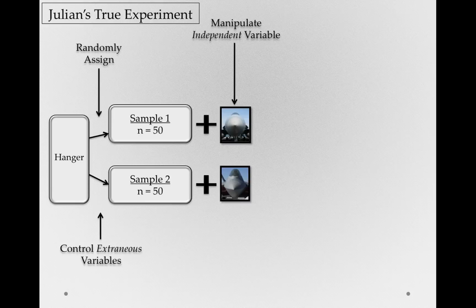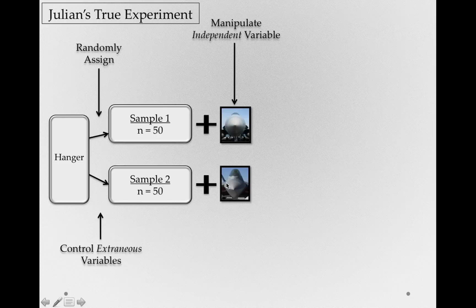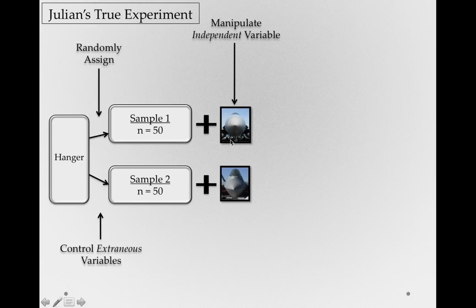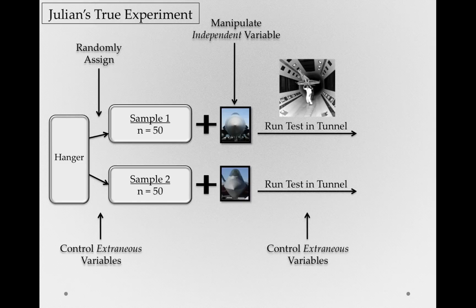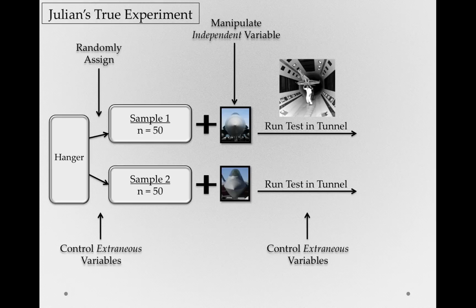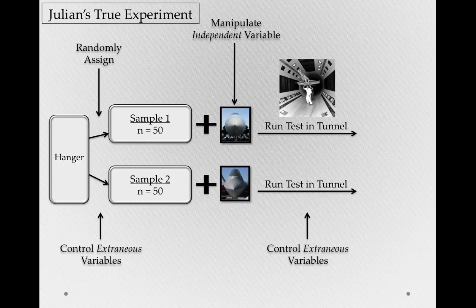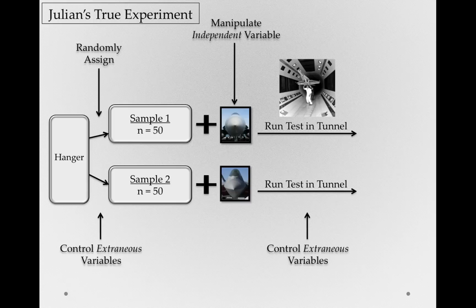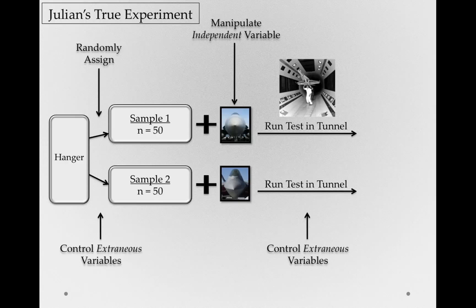So now, we have 50 planes that, whether they had a conical nose at the start or not, actually do now, so sample one. And we have a whole other sample of planes, whether or not they had the raptor type nose to begin with, they do now. So we've manipulated that variable. The next thing we're going to do is run our test in a tunnel. So before, remember we actually just observed the logs of these planes. We have no idea what these planes were doing when they were actually being flown before. But now, we're going to further control extraneous variables by running the planes under the exact same conditions.